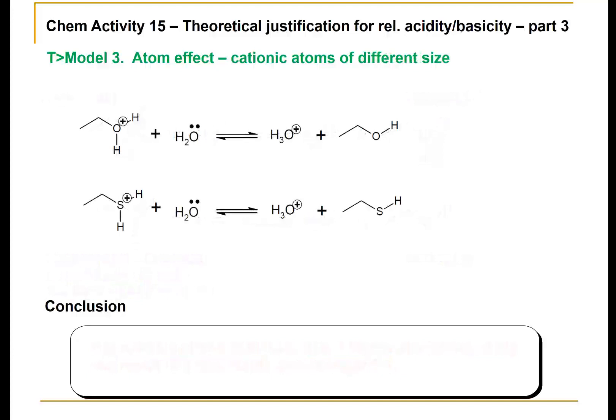We also need to look at, in terms of the atom effect, cationic atoms of different size. Here we have the protonated alcohol again and a protonated sulfur compound, called a thiol, so a protonated thiol. Now in this case, a positive charge means a deficiency in electron density. Having a deficiency in electron density — that is, having too few electrons over a larger size — is less stable.